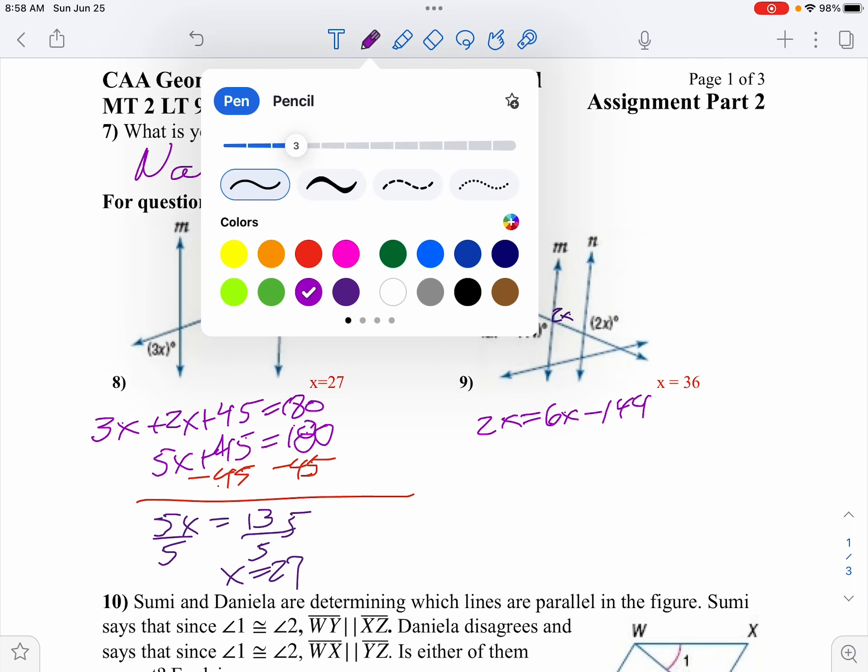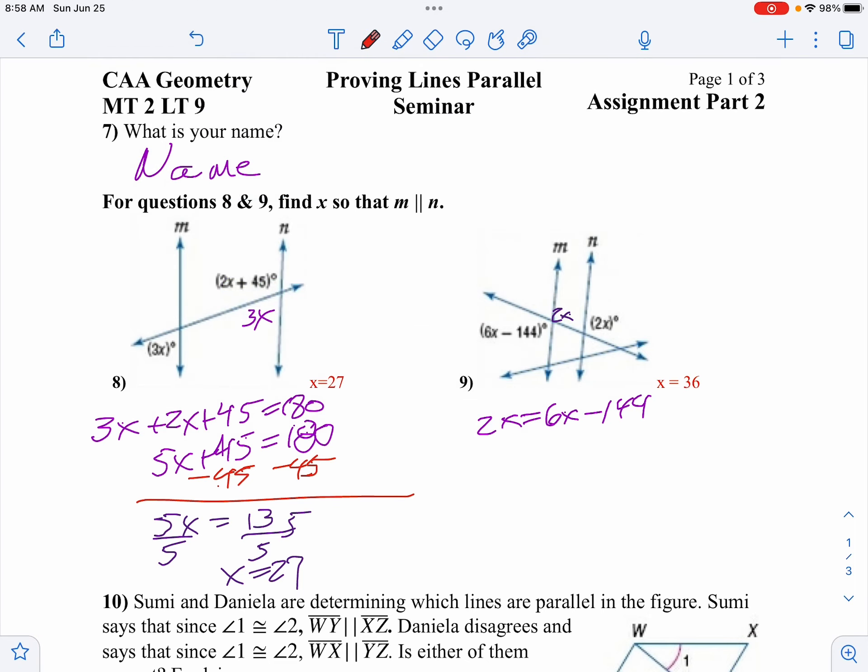Now let's do the algebra. Let's subtract 6x from both sides. So we get negative 4x equals negative 144. Divide both sides by negative 4. And x would be 72. And there is our work for that problem.